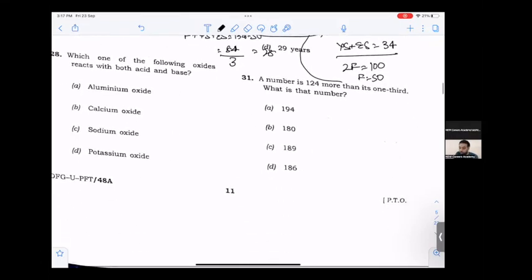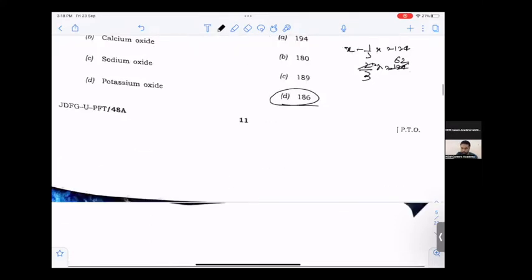A number is 124 more than one third of itself. Setting up: x minus one third x equals 124, so two-thirds x equals 124. Therefore x equals 62 into 3, which is 186.